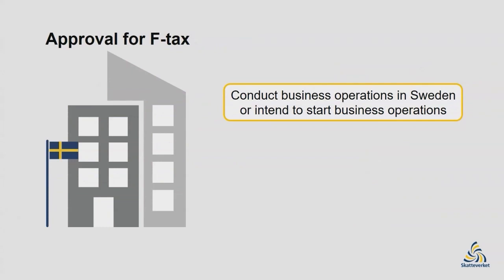You have to apply to the Swedish Tax Agency for F-tax approval, and you can easily apply at skatteverket.se through the e-service registration of foreign companies in Sweden. When can a non-Swedish construction company be approved for F-tax? You can be approved if you conduct business operations in Sweden or intend to start business operations. However, companies that only carry out business activities and work from abroad cannot be approved for F-tax, even if they undertake assignments for Swedish companies.